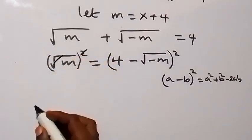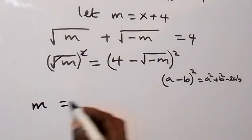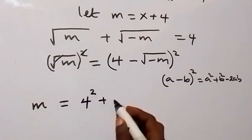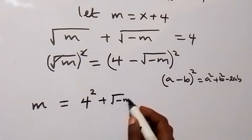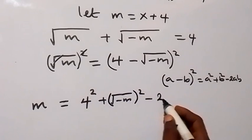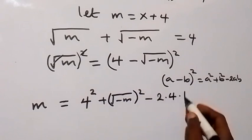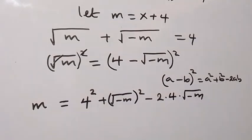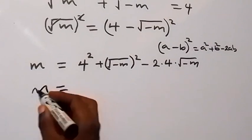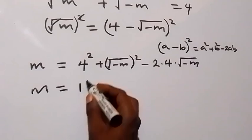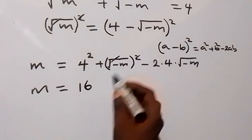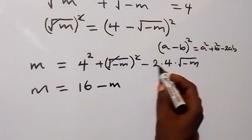After squaring, the square cancels the square root on the left, leaving m. On the right we have 4² + (√(-m))² - 2·4·√(-m), which gives us m = 16 + (-m) - 8√(-m), that is m = 16 - m - 8√(-m).